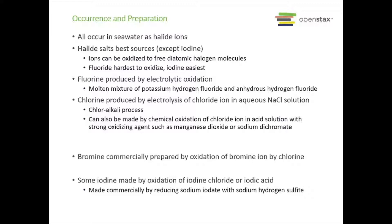We produce fluorine via electrolytic oxidation. This is done by taking a molten mixture of potassium hydrogen fluoride and anhydrous hydrogen fluoride, and when they're combined they give us fluorine gas.